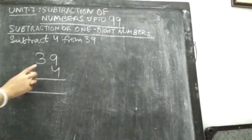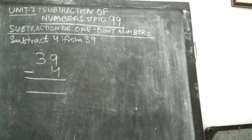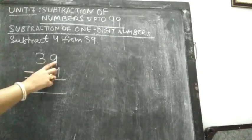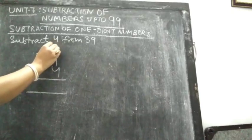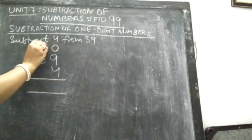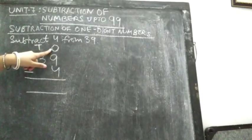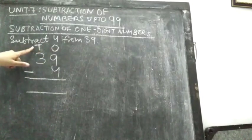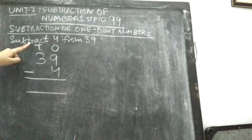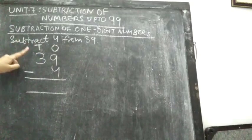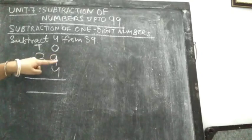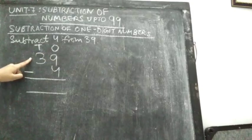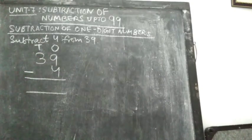39 minus 4. You can see two digits are there. So write 1s and 10s — T and O. O stands for 1s and T stands for 10s. And always remember in subtraction, the first number will be the bigger number. 39 is bigger here. So how are you going to subtract this?